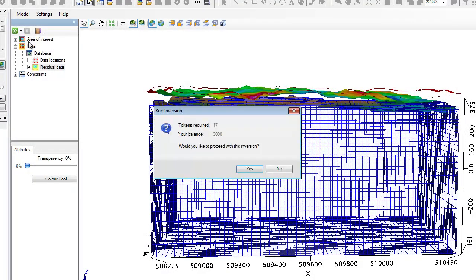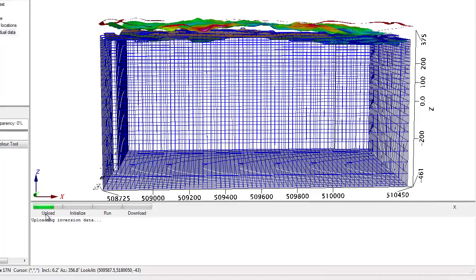Thank you, Ian. The number of tokens needed to run an inversion is directly proportionate to the number of points on the surface of the Voxel model. I accept the cost and I move on.